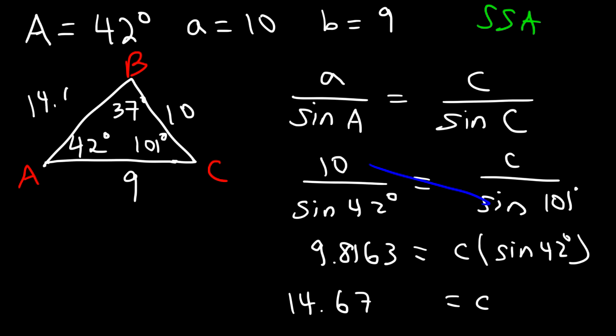It's good to check your answers for reasonableness: the shortest side should be across the smallest angle, and the longest side across the largest angle. Side B is the shortest side and it's across angle 37 — the lowest angle. Side C is the longest side and it's across angle 101 — the largest angle. This is a quick way to verify your answers make sense.